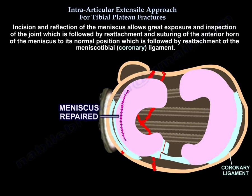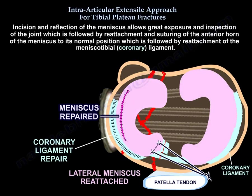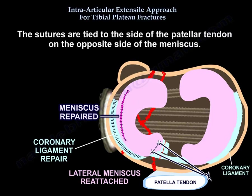Incision and reflection of the meniscus allows great exposure and inspection of the joint, which is followed by reattachment and suturing the anterior horn of the meniscus to its normal position. This is then followed by reattachment of the meniscus tibial ligament — the coronary ligament. The sutures are tied to the side of the patellar tendon on the opposite side of the meniscus.